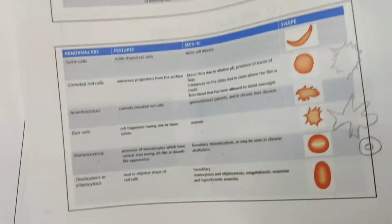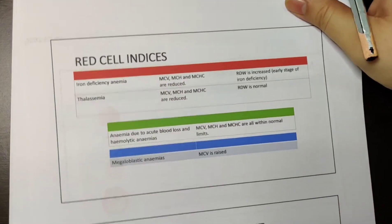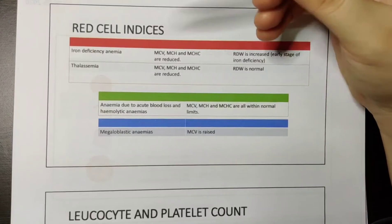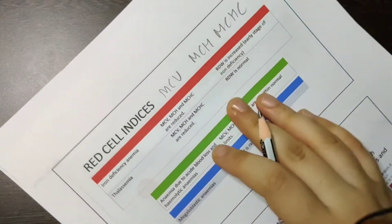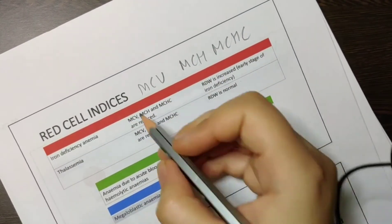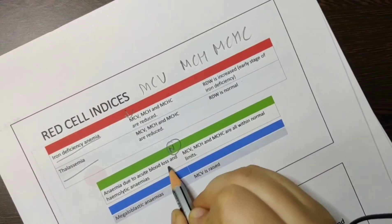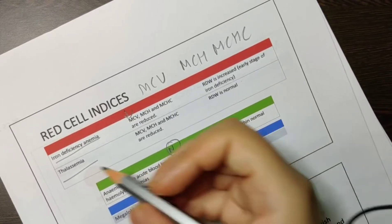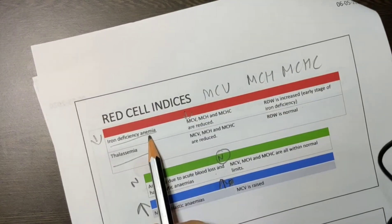So we have covered the different types of cells. Now, red cell indices — remember, MCV, MCH, and MCHC. If these indices are reduced, you can see iron deficiency anemia and thalassemia. If they are normal, this is seen in anemia due to acute blood loss — for example, after an accident, the values remain within normal limits. And if they are increased, that is seen in megaloblastic anemia.